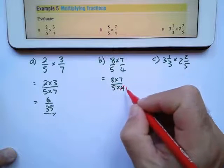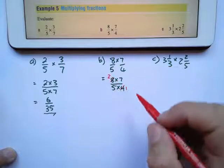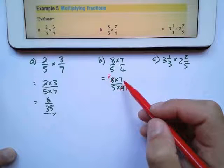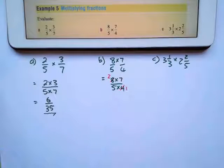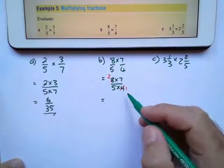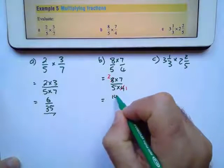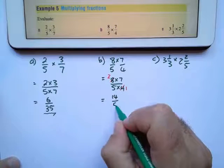So 4 divided by itself is 1. 4 divided into 8 is 2. 2 can't divide anything at the bottom, 7 can't. So I can then multiply. I simplify before I multiply. 2 times 7 is 14, 5 times 1 is 5.